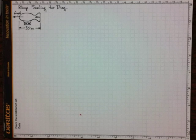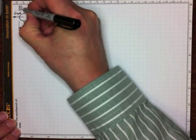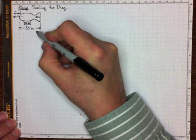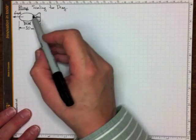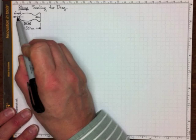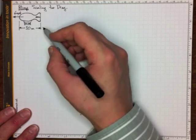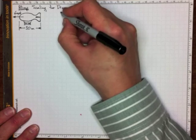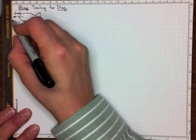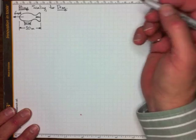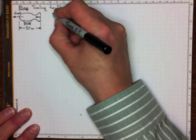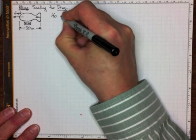Here's an example where we'd like to do a scaling calculation, because we'd like to make a model scale test of something really big. In this case, it's a blimp, and the real-sized one is about 30 meters long that we're proposing to build, and we expect it to travel at about 6 meters per second through the air. We'd like to figure out what the drag force on that blimp is due to the air flowing around it, and we'd like to do that with a scaling test using a model that's only one meter long — a 1/30th scale model.